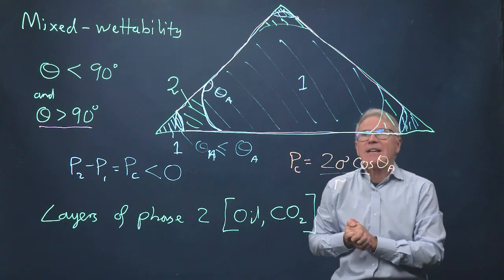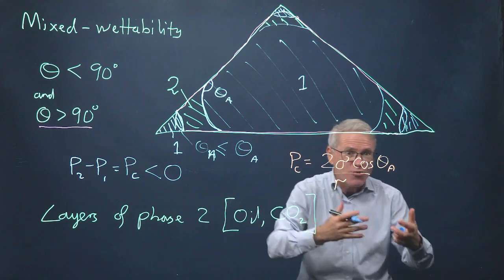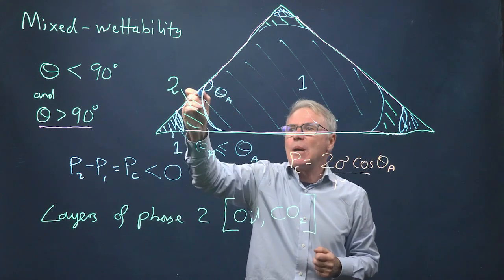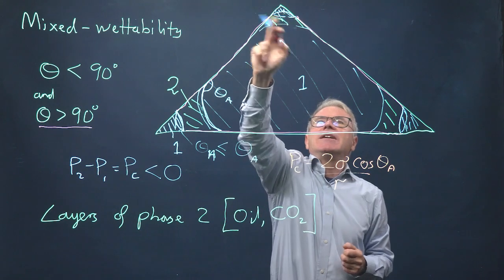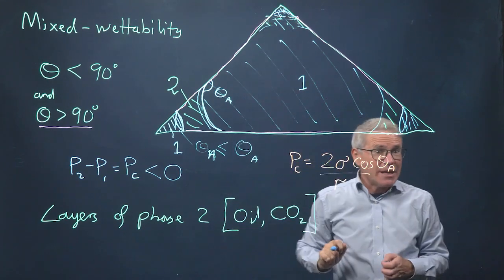Now, they don't retain connectivity ad infinitum. You can see here, if I continue to increase the pressure in phase 1, these layers will get thinner and thinner. And here, the layer could completely collapse, basically the two menisci touch.